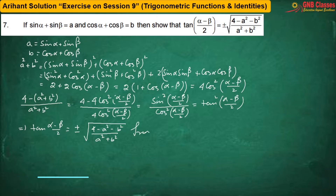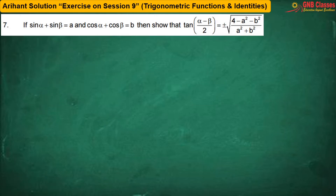Therefore, tan((α−β)/2) = ±√((4 − a² − b²)/(a² + b²)). Hence proved. Let us move for the next problem.